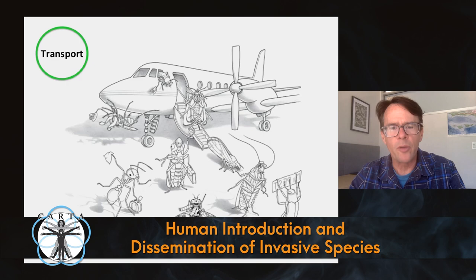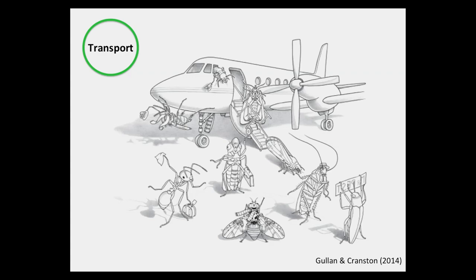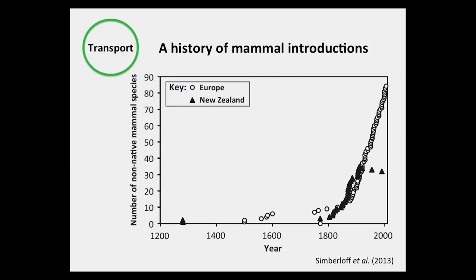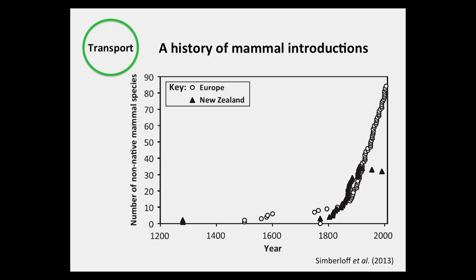In contrast, many species of plants and vertebrates tend to be intentionally introduced, and some of these introductions can go awry and cause environmental impacts. The rapid increase in the introduction of non-native species is evident from a graph published by Simberloff et al. about 10 years ago, showing an 800-year history of mammal introductions into Europe and New Zealand. You can see that in the late 1800s the rate of introduction increased greatly. Notably, in New Zealand the rate fell off in the 1900s, as people realized that biological introductions were sometimes environmentally harmful and took steps to limit new introductions and manage already-established species.